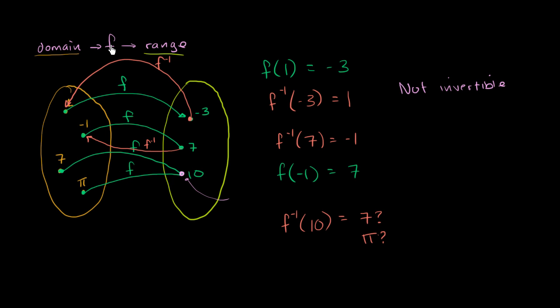So this function, f is a function. For any member of this domain, it goes to a unique, it's a very well-defined element in the range. But the other way around isn't true. For the inverse function, for any element in this set, it doesn't go to only one element in that set. This 10 could be mapped to either pi or 7. So f inverse, so another way to think about it, this is not an invertible f, f is not invertible. f is a function, but the inverse mapping is not a function, so we would say that f is not invertible.